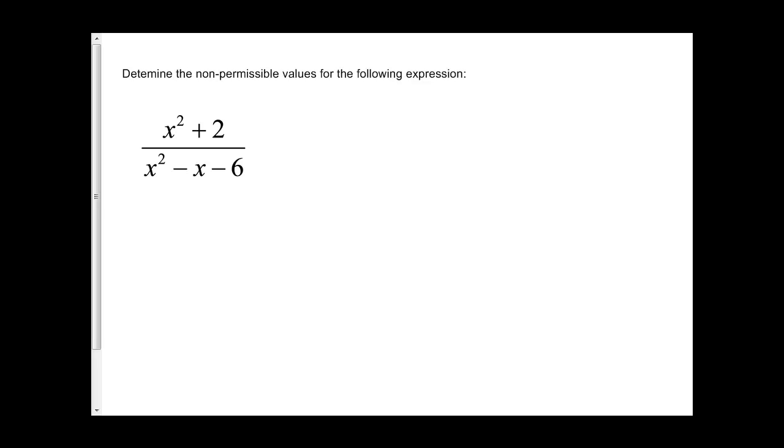If we have a more complicated one, again we're only looking at the denominator. The only part that we care about is x squared minus x minus 6. We know that this cannot equal zero.